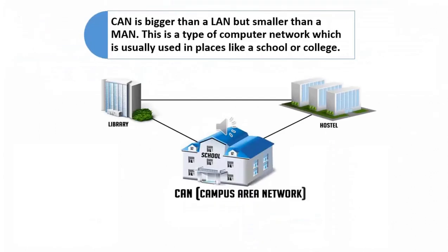Next is Campus Area Network. CAN is bigger than a LAN but smaller than a MAN. This is a type of computer network which is usually used in places like a school or college. This network covers a limited geographical area — it spreads across several buildings within the campus. Examples of CAN are networks that cover schools, colleges, buildings, etc.